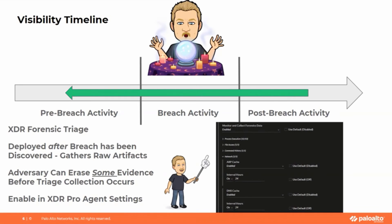Advanced adversaries who are well-versed in forensic tracking will attempt to clear as much evidence as they can. If they have admin-level capability, they can clear Windows event logs, so when you deploy the agent post-breach, the first thing it sees is an event saying logs were cleared, and everything going forward is captured. This is good, and even better in combination with XDR Pro, where raw artifact data gathered by the forensic package can give added visibility above what the XDR Pro agent telemetry alone can provide.